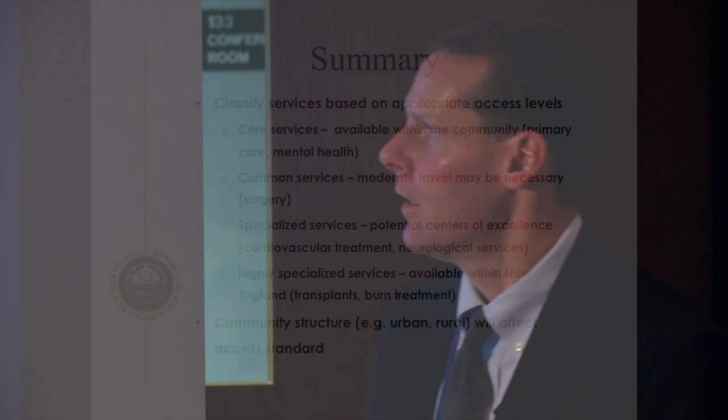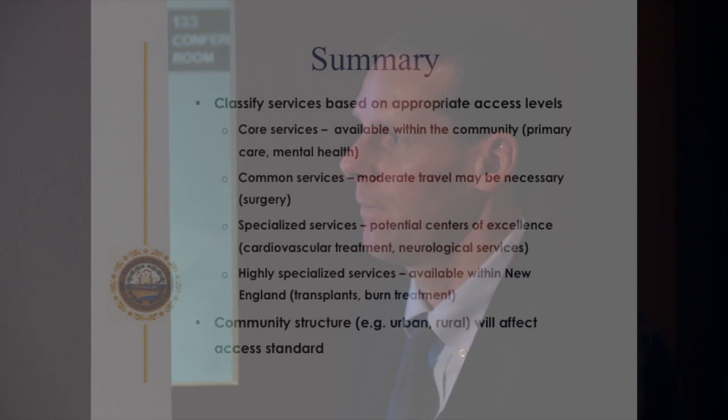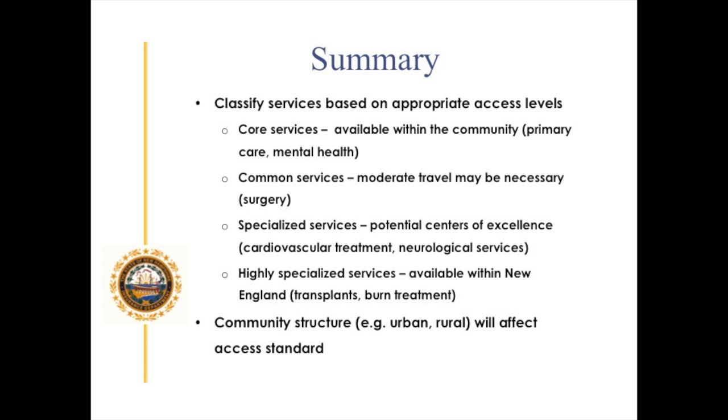In summary, we've divided up the services between those that are core services — if you live in Nashua, you should be able to get them in Nashua — and those on the other end of the spectrum, where we know the patient is going to have to travel out of state for specialized services. The community structure is going to play a role in how we develop these requirements. If you've only got one provider in town, we're not going to put a network adequacy requirement that forces the carrier to contract with that provider — that's the easiest way to see an escalation in payment rates and in turn our premiums.